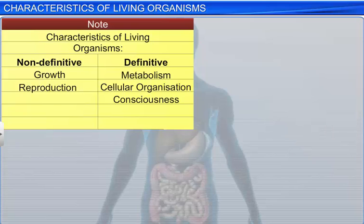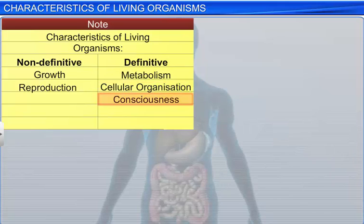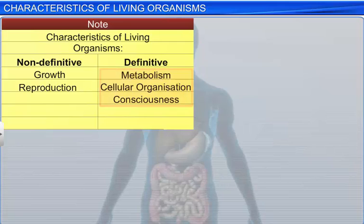Thus, we can say that metabolism, cellular organization, and consciousness are the three definitive characteristics of living organisms.